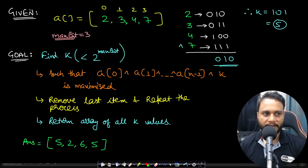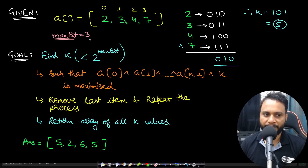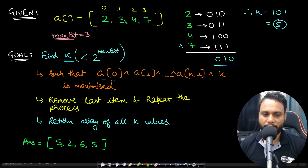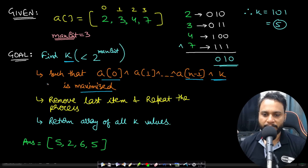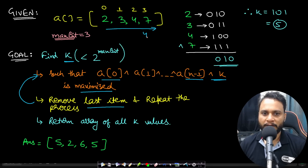Now let's look at an example for better understanding. Our given array is 2, 3, 4, 7 and max bit equals 3. Our goal is to find a value k where k should be less than 2 to the power of max bit — that means less than 8 — such that if you take the XOR from A[0] till the last element and then XOR it with k, that value is maximized. After each query we remove the last item and repeat, until the array is empty. If the array length is 4, I have to repeat this process 4 times, recording each answer.